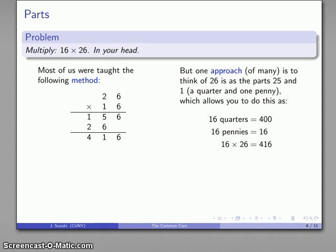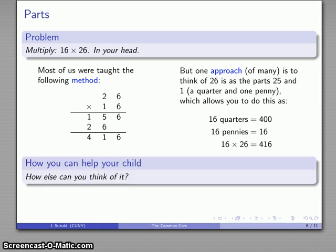Now, a question that parents often ask is, well, how do I help my child with this sort of problem? And so, here's a useful question to think about. How else can you think about this? If you want to think about these numbers as parts, how else can you think about the numbers? Again, 26. I am an adult. I'm used to thinking about quarters and pennies. So, that's the idea that 26 is 25 and 1 comes somewhat naturally. But there's other things we can do. 26 is any number of other ways we can look at it.